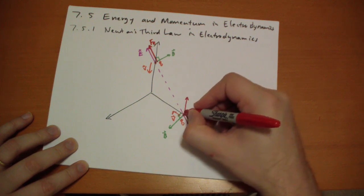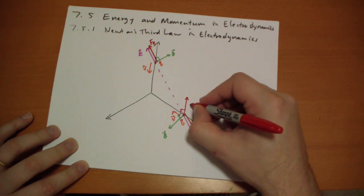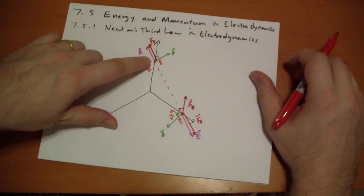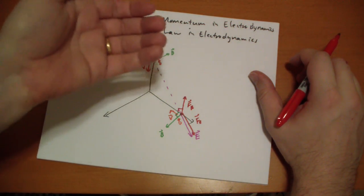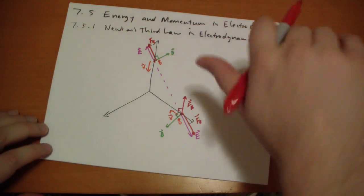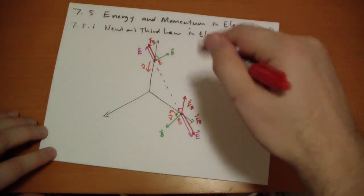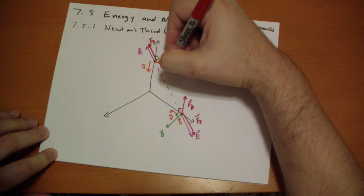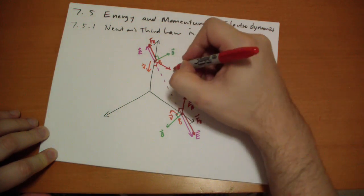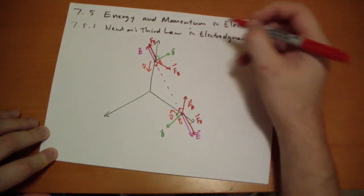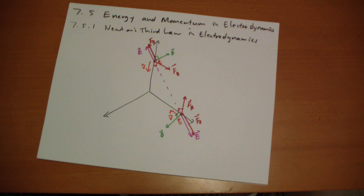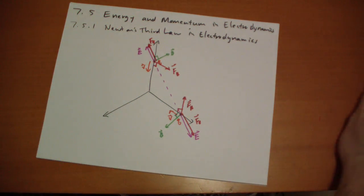This is the force through the magnetic field. In this case, V cross B, V cross B, it's pointing this way. Perpendicular to the... The electric fields cancel. The magnetic fields don't. They're not equal and opposite.